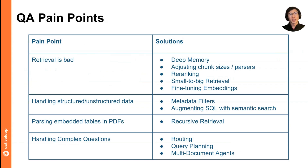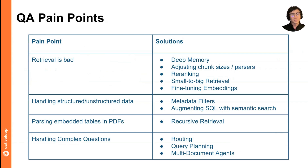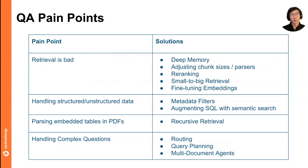Another way of looking at these techniques is a table of what are the common pain points users face when building a standard RAG pipeline, and what are the solutions that resolve each pain point. Some of the most common pain points we hear from users: one, the retrieval is bad — you're not able to get back the relevant context, whether it's low precision or low recall.